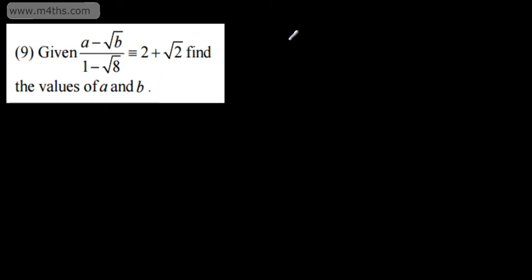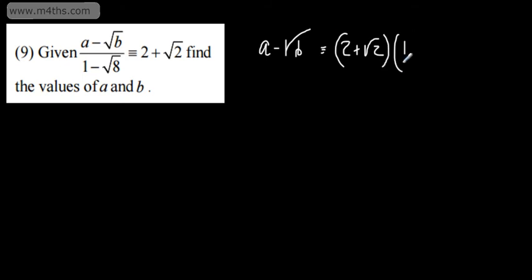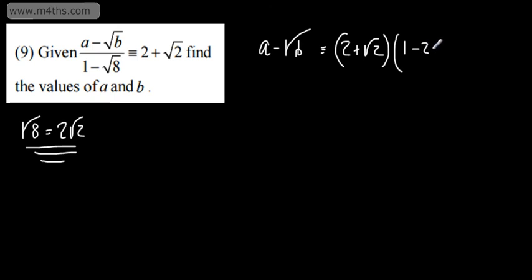In this one, we've got an identity. We're given that A minus the root of B over the quantity 1 minus root 8 is the same as 2 plus root 2, and we're asked to find the values of A and B. All I'm going to do here is simply multiply through by the denominator. So multiplying both sides by the denominator, we've got 2 plus root 2, and then we've got 1 minus the root of 8. You might want to write the root of 8 as a simplified third, and that would be 2 root 2. I'm going to go ahead and simplify, so I'm going to write that this is going to be 1 minus 2 root 2 instead of 1 minus root 8.